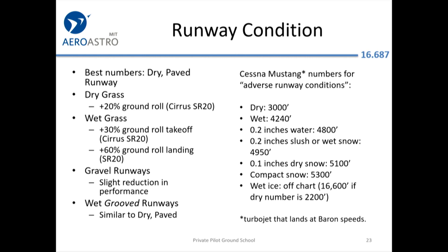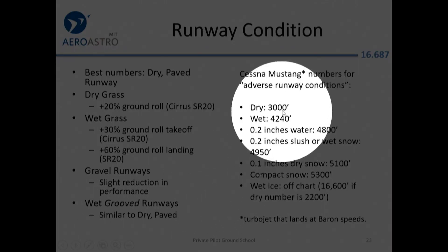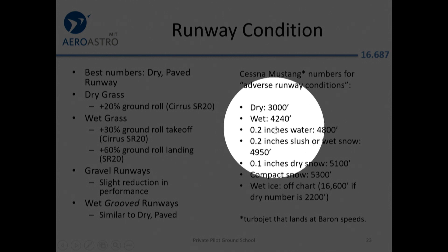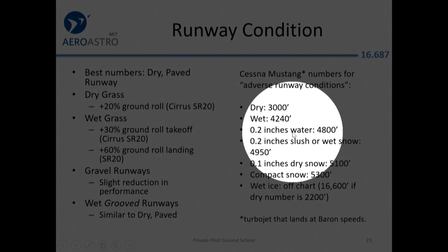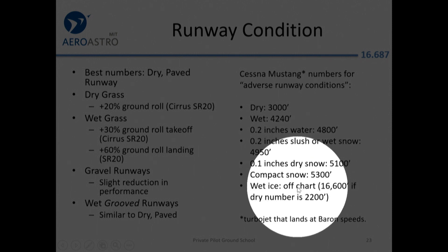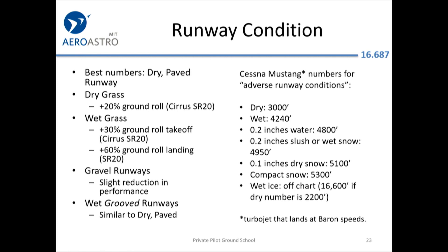Here are some numbers from the Cessna Mustang: in conditions where you need 3,000 feet of dry runway, Cessna says you'll need 4,240 feet if it's wet. If water is actually standing on it, you'll need yet more runway. For snow, a little bit more. Wet ice is just off the chart — starting from 2,200 feet of dry runway, you would need 16,600 feet. That's why even fairly small business jets may need Logan or Hanscom Field if they're reporting snow on the runway.